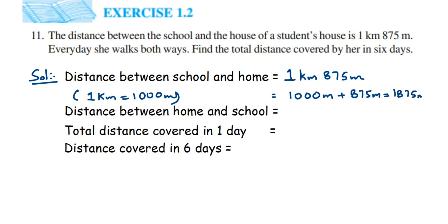Similarly, distance between home and school will also be 1875 meters. The total distance covered in one day, while going and coming back from school, you have to add 1875 two times.